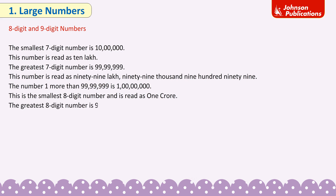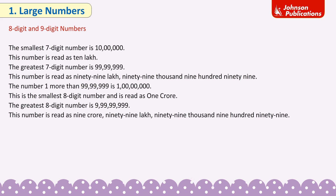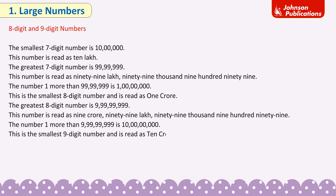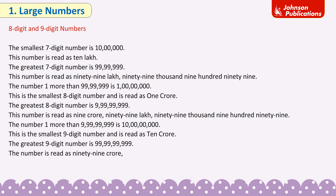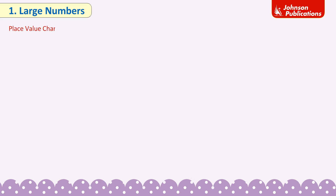The greatest 8-digit number is 9 crore 99,99,999. The number 1 more than 9 crore 99,99,999 is 10 crore. This is the smallest 9-digit number and is read as 10 crore. The greatest 9-digit number is 99 crore 99,99,999.